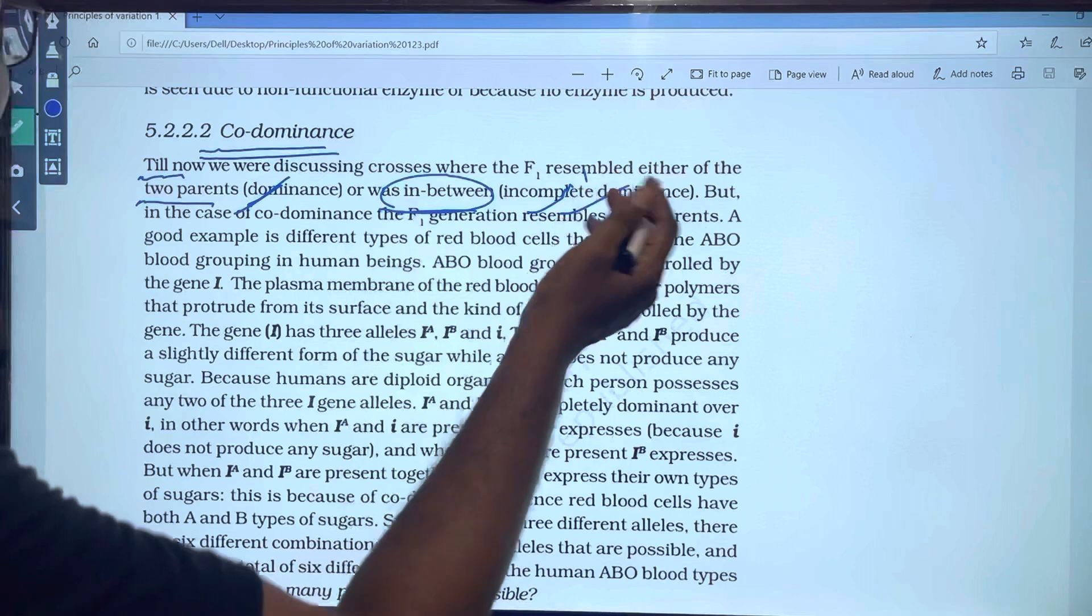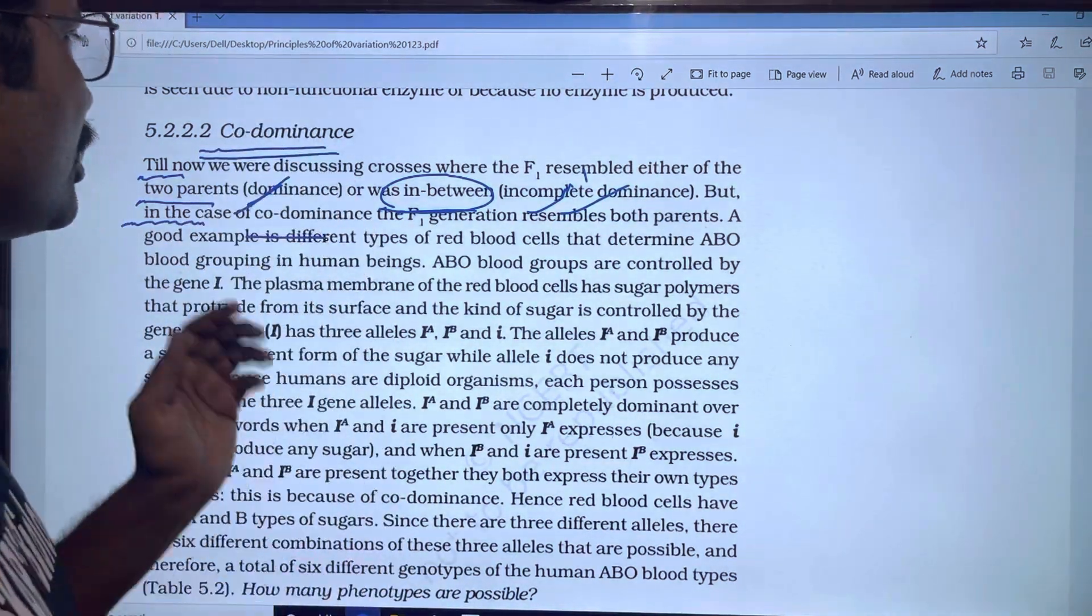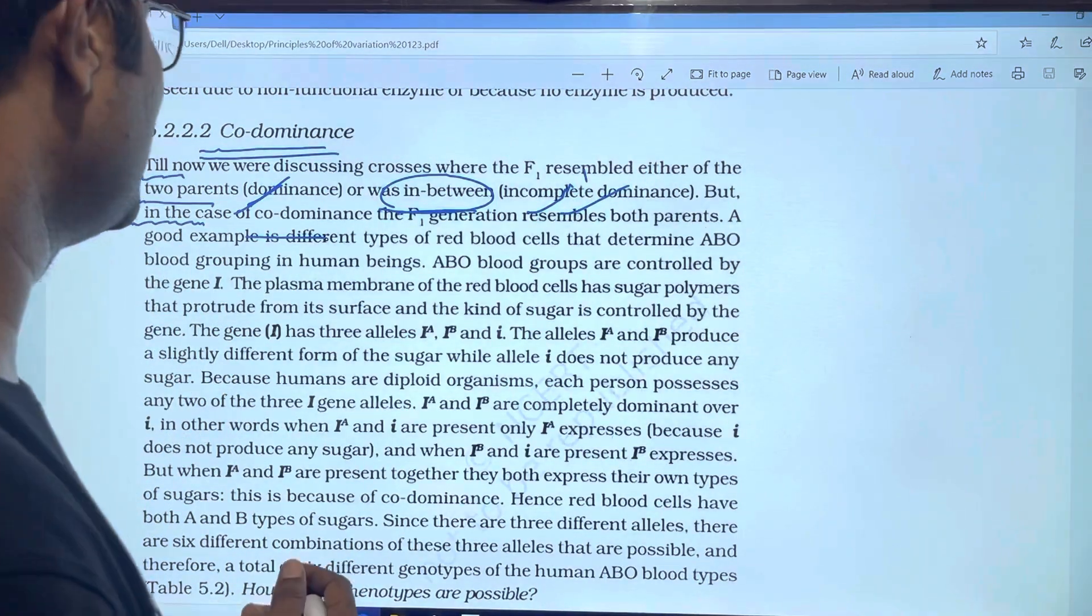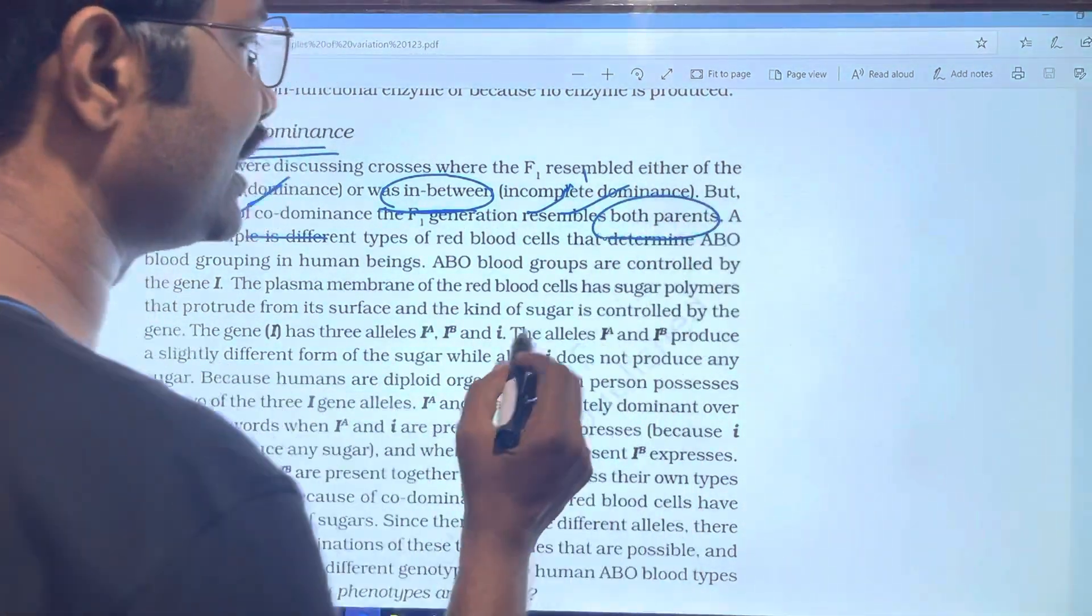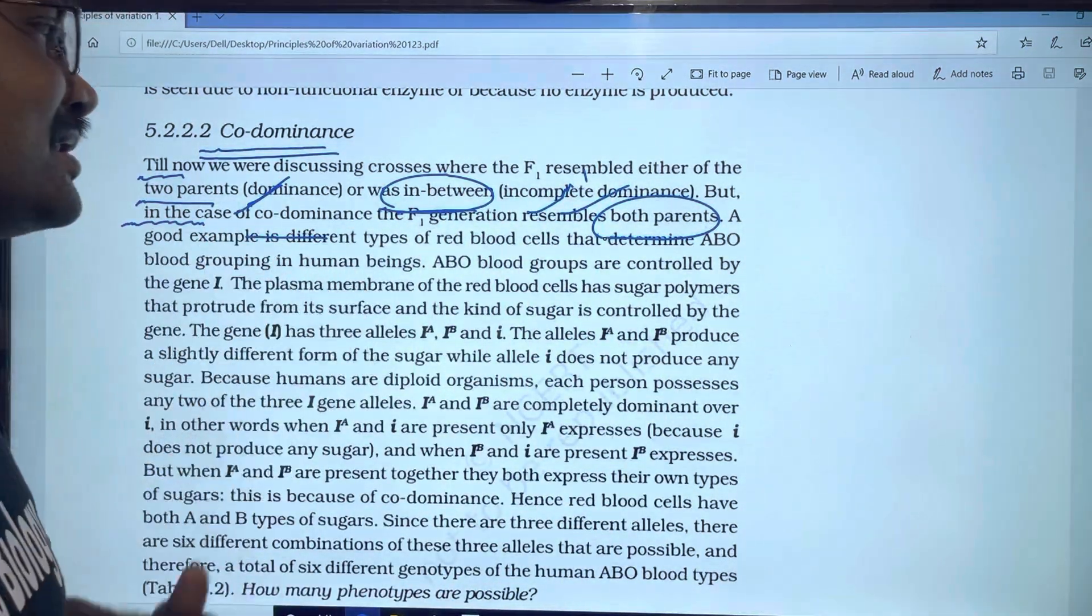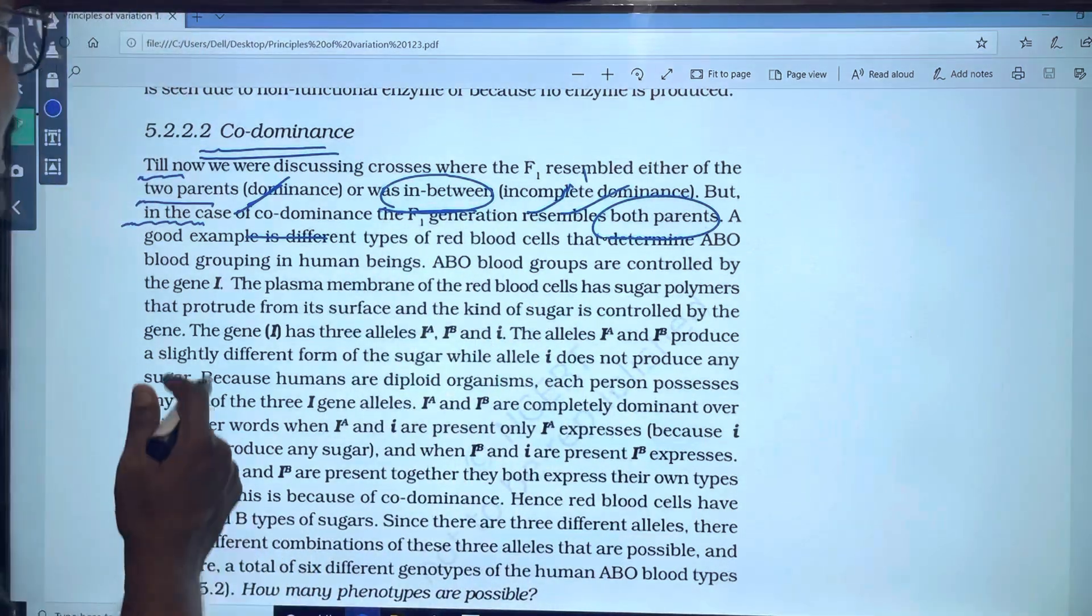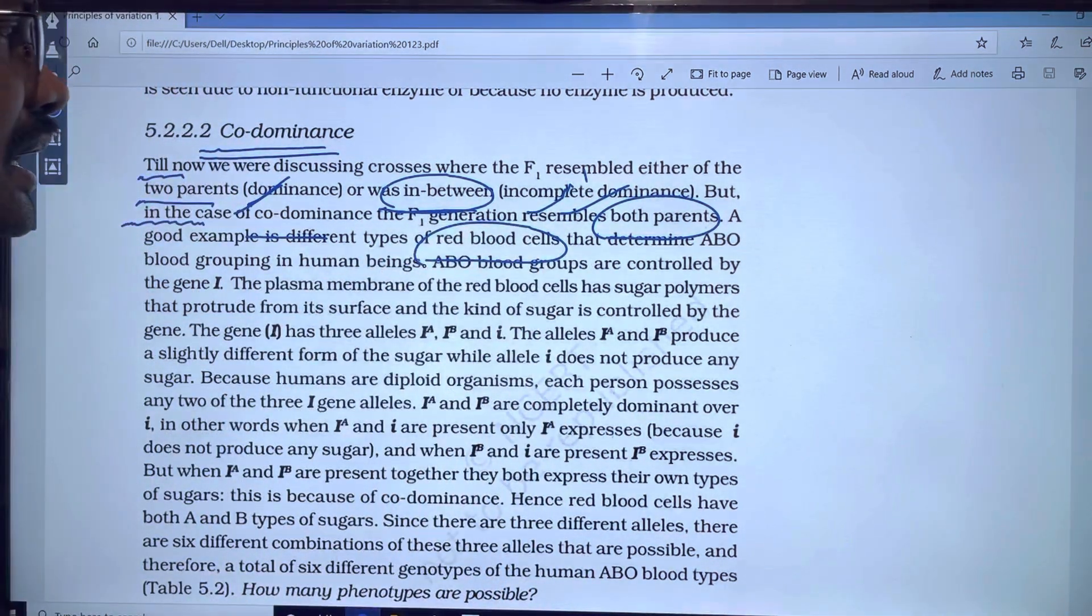But in the case of co-dominance, F1 generation resembles both parents. Parents two characters - co-dominance. Good example: red blood cells determine ABO blood grouping in human beings.